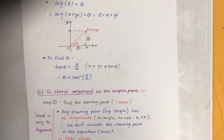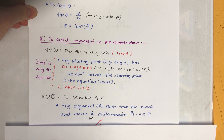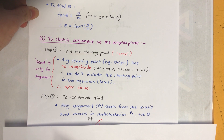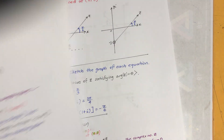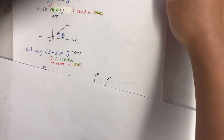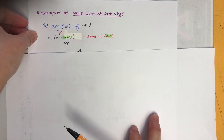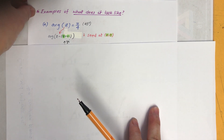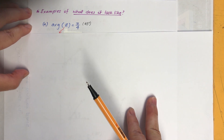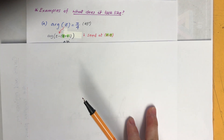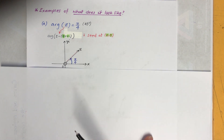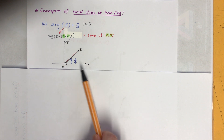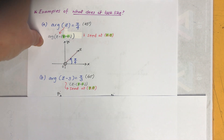Remember that any argument: theta starts from the x-axis and moves anti-clockwise, unless it's negative, in which case it's clockwise. So if we sketch arg z = π/4, which is 45 degrees, the seed — the starting point — is at the origin (0, 0), and it goes from the x-axis anti-clockwise to π/4.